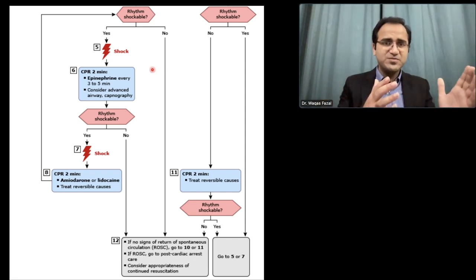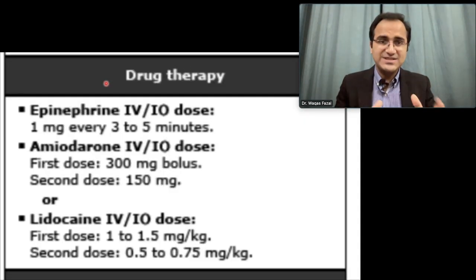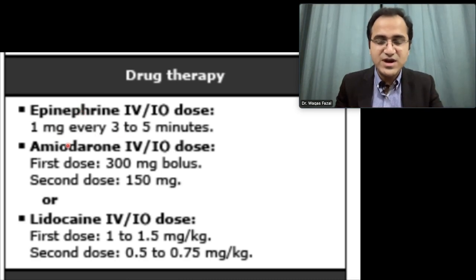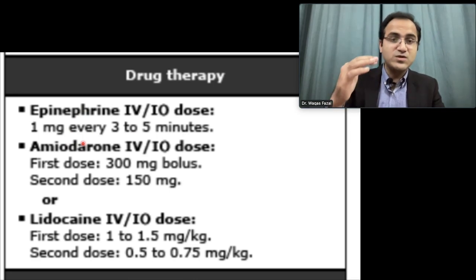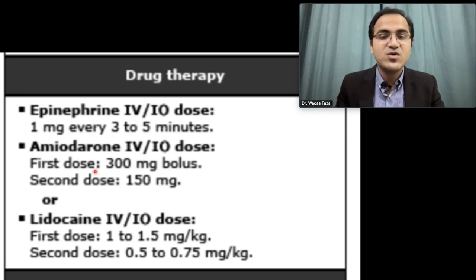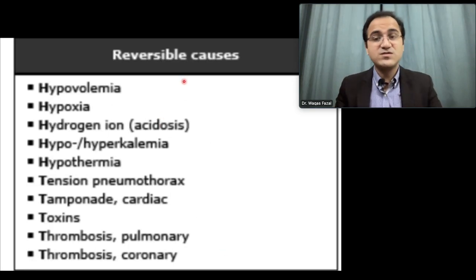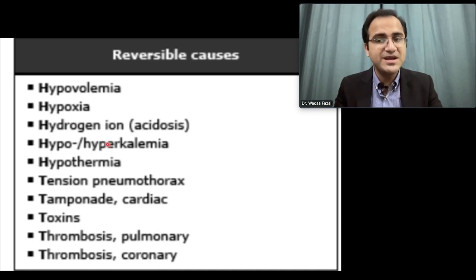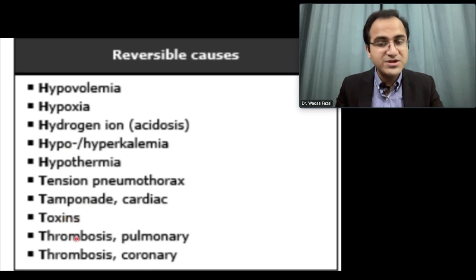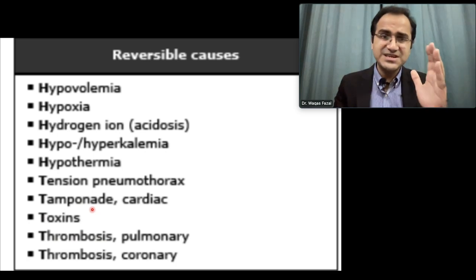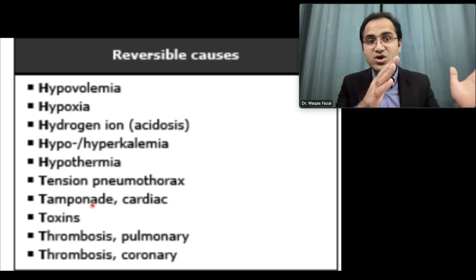The ACLS chart will be posted on the Facebook page — link in the top comment. Drug dosages: epinephrine 1 mg every 3 to 5 minutes; amiodarone IV — first dose 300 mg bolus, second dose 150 mg; or if amiodarone is unavailable, lidocaine — first dose 1 to 1.5 mg/kg, second dose 0.5 to 0.75 mg/kg. Reversible causes follow the 5 H's and 5 T's: hypovolemia, hypoxia, hydrogen ion (acidosis), hypokalemia/hyperkalemia, hypothermia; and tension pneumothorax, cardiac tamponade, toxins, pulmonary thrombosis, coronary thrombosis.